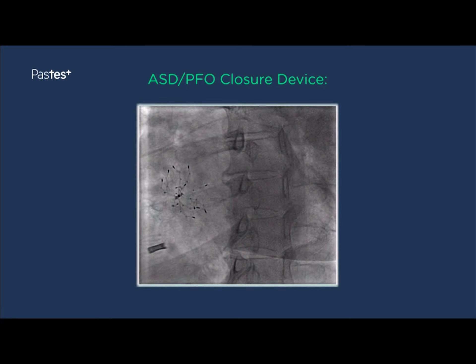In this image you can see a percutaneous ASD closure device implanted across the atrial septal defect. There are two sides to this device — one which sits in the left atrium and one in the right atrium — and they get pulled together to form an umbrella-like structure that straddles the hole. These little legs are filled with a membrane which over time becomes endothelialised, closing up the atrial septal defect in its entirety. This is a very successful technique and, for an uncomplicated ASD, is the treatment of choice.